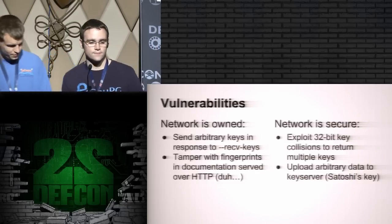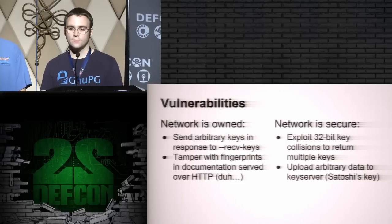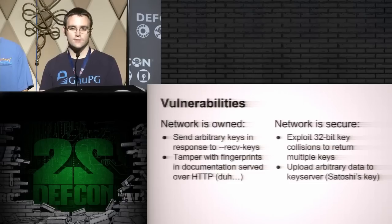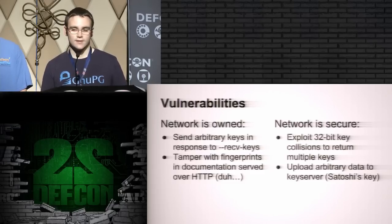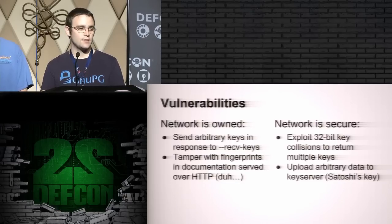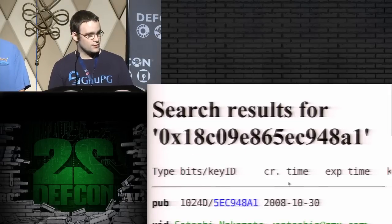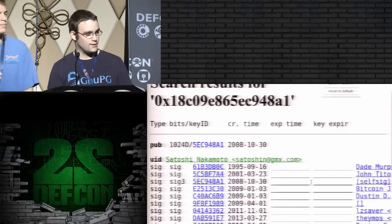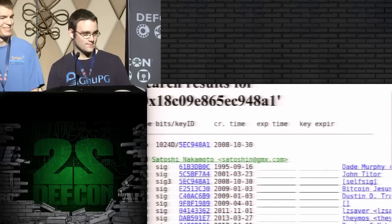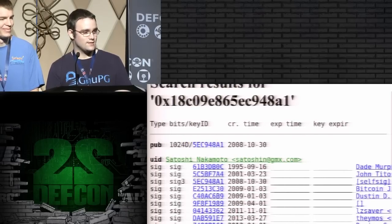This leads to two big classes of vulnerabilities. First, if the attacker owns the network, they can exploit the fact that GPG performs no verification to send arbitrary keys back to you in response to a receive-keys request. And they can tamper with the fingerprints and documentation served over an insecure channel — I've seen many cases where documentation for what fingerprint to use is just over HTTP. If the network is secure, the attacker can still exploit 32-bit key collisions to return multiple keys with the same ID, and they can upload arbitrary data to the key server. For example, Satoshi Nakamoto's key was created in 2008, yet it has signatures on it from 1995 by Dave Murphy from the movie Hackers, and one from 2001 by the Usenet time traveler John Titor — neither seems legitimate, but the key server is happy to show them.